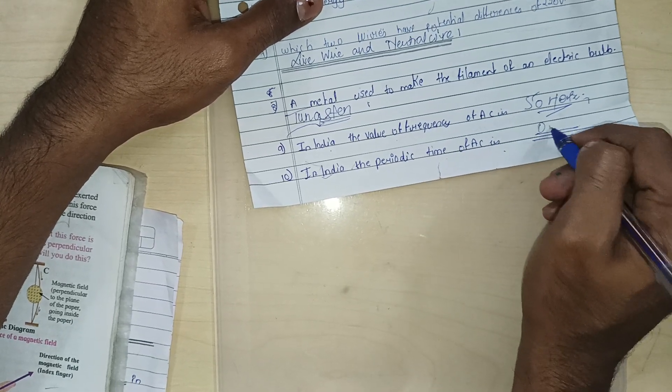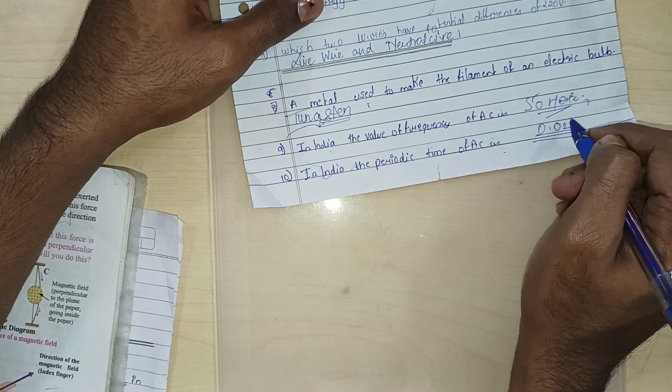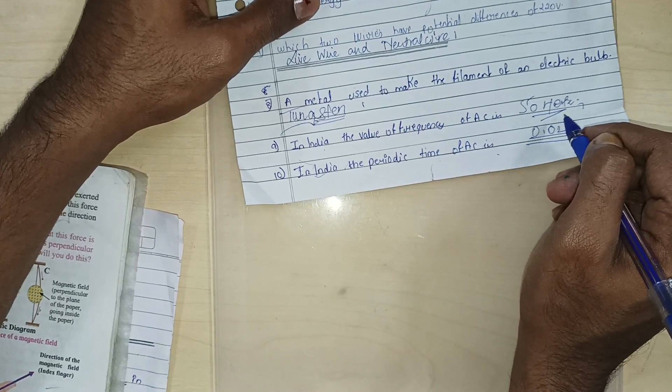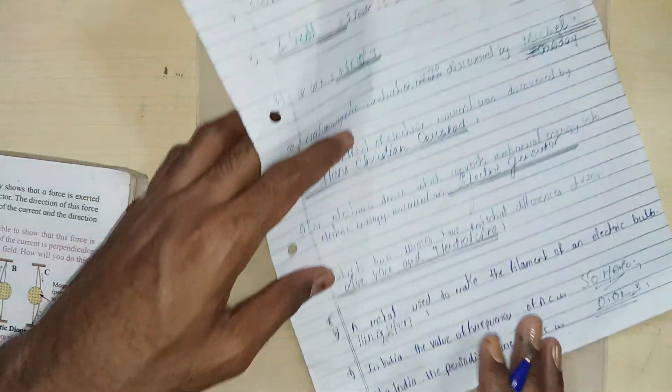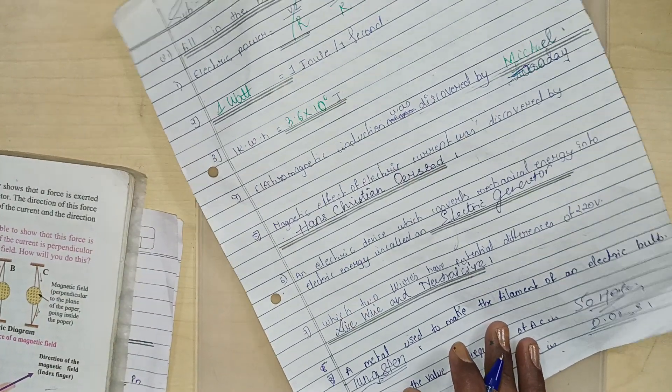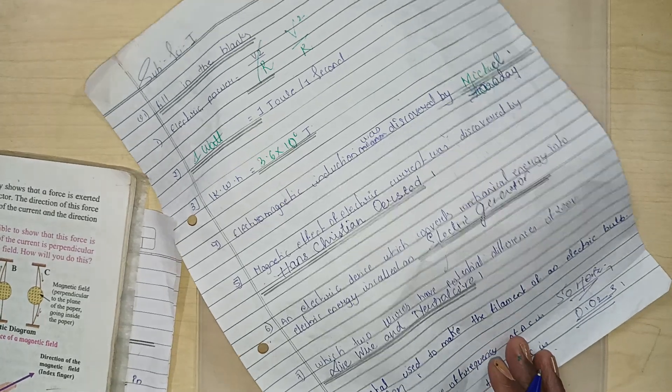In India the periodic time of AC is dash. What is it? 0.02. What is the unit? 0.02, that's it. That means 0.02 second. Clear? That's it.